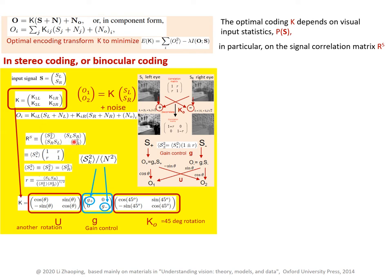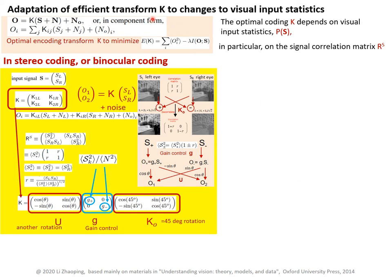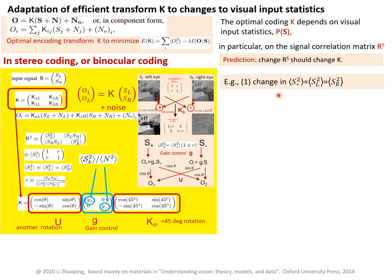This will determine the decorrelation matrix K0. The decorrelated channels each have their own signal-to-noise, determined by this, which then determines the gain control matrix G. So if we change the input statistics, we should then change the efficient coding K. This is one of the strongest predictions from the efficient coding principle, and let's see how this applies in stereo coding by example.